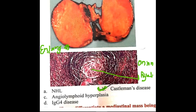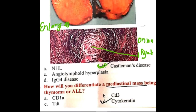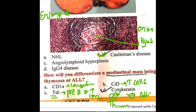How will you differentiate a mediastinal mass being a thymoma or ALL? TdT is expressed for pre-B and T cell lymphoblasts; for pre-B and T lymphoblasts or ALL we use TdT. CD1a is expressed in Langerhans cell histiocytosis. CD3 is for signal transduction of T cells. Cytokeratin is positive for thymoma and negative for ALL, so with cytokeratin we can differentiate thymoma from ALL.